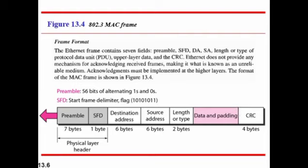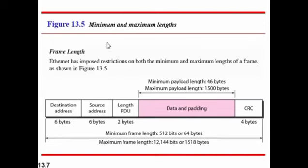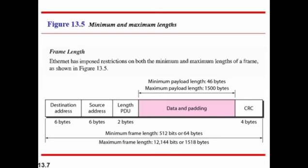Regarding minimum and maximum frame lengths: the minimum payload length is 46 bytes and the maximum payload length is 1500 bytes. The minimum frame length is 512 bits (64 bytes), and the maximum MAC frame length is 1518 bytes.